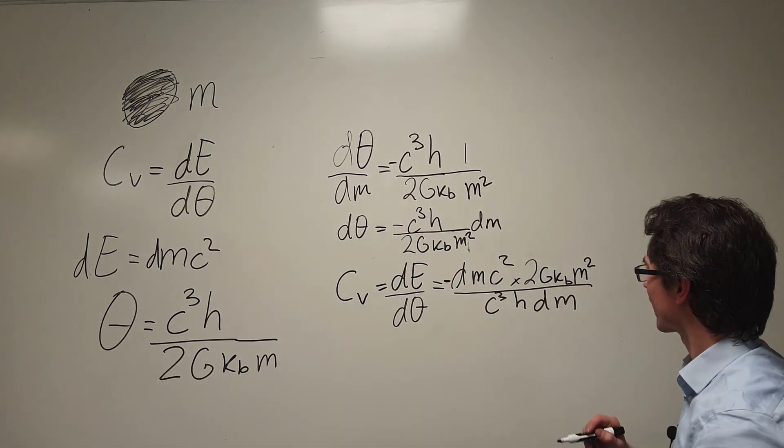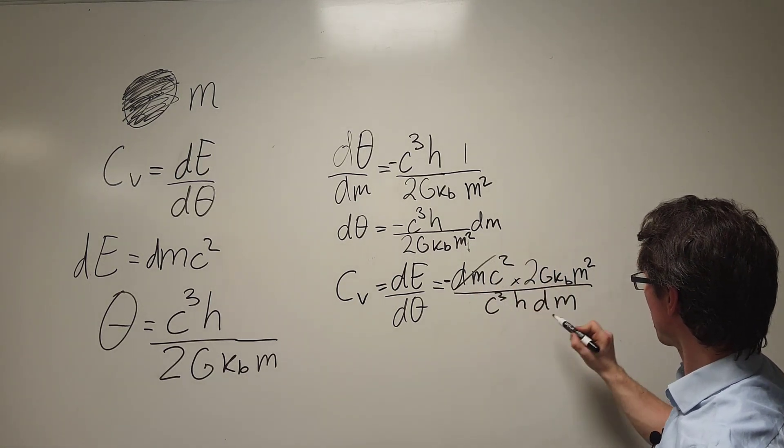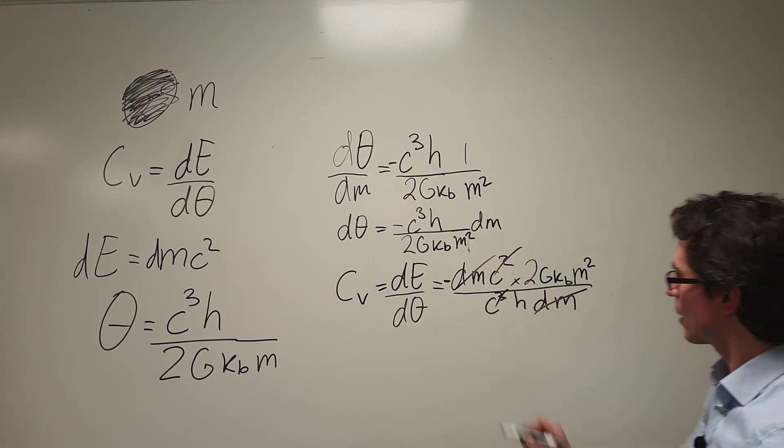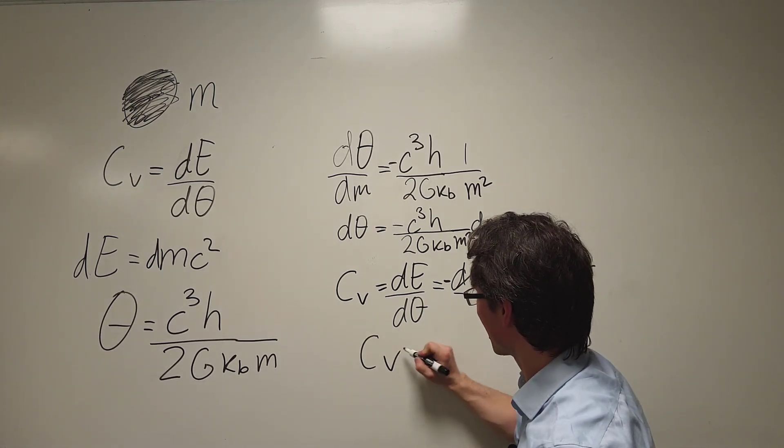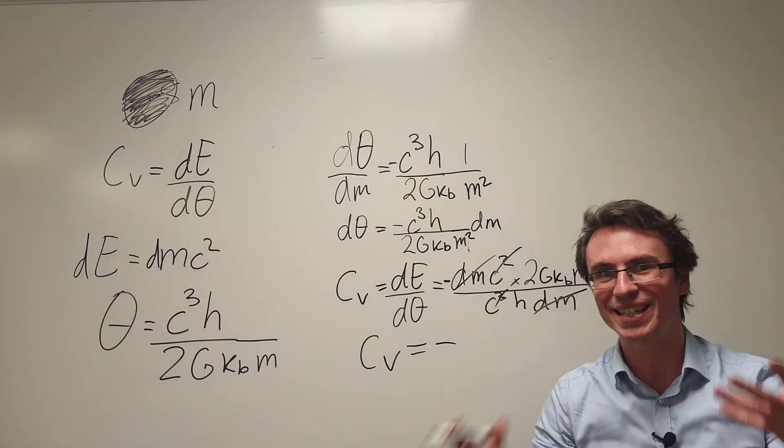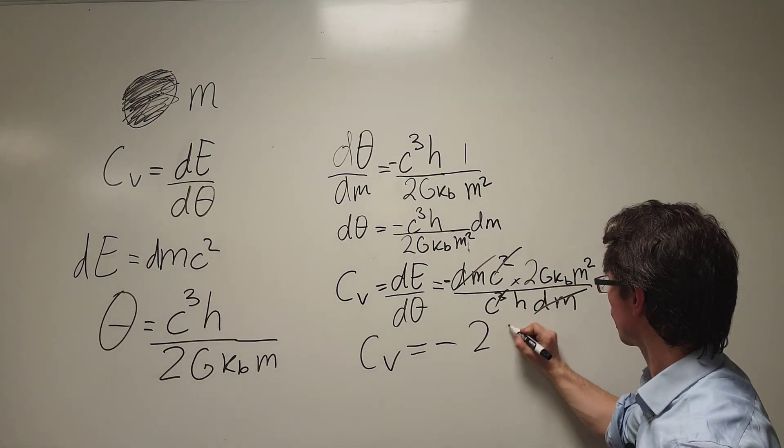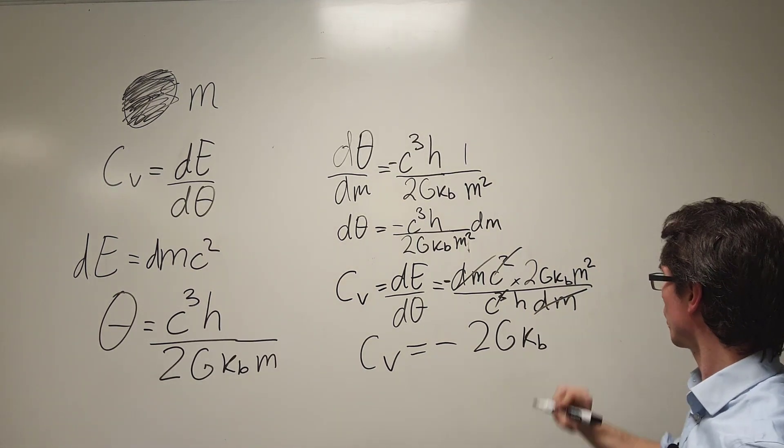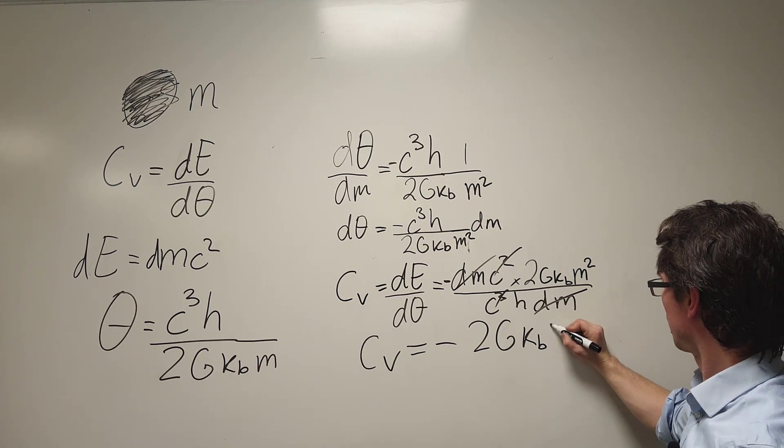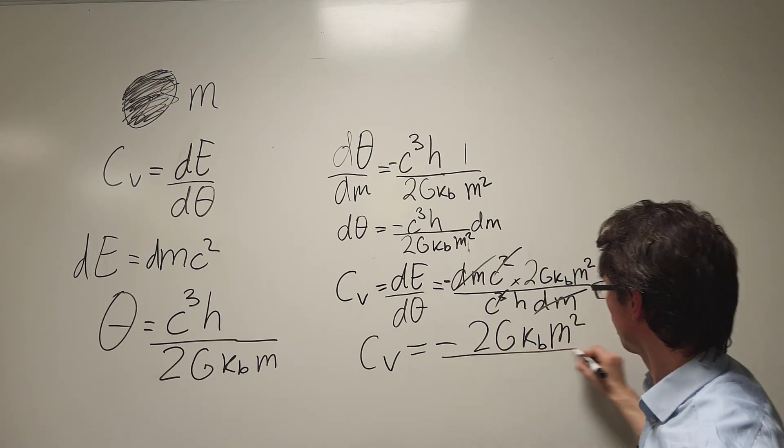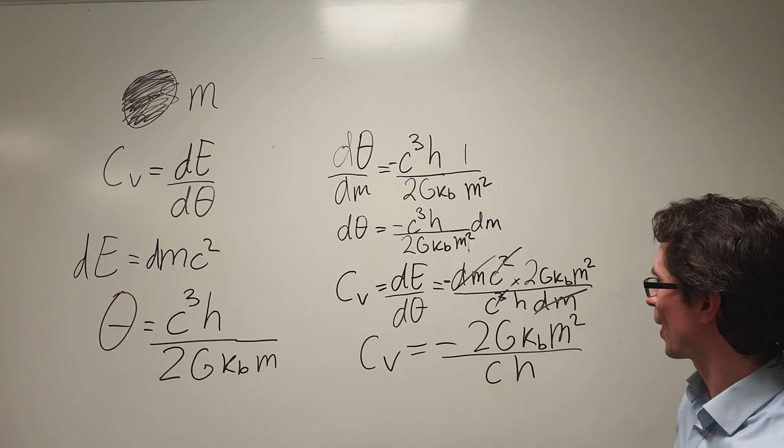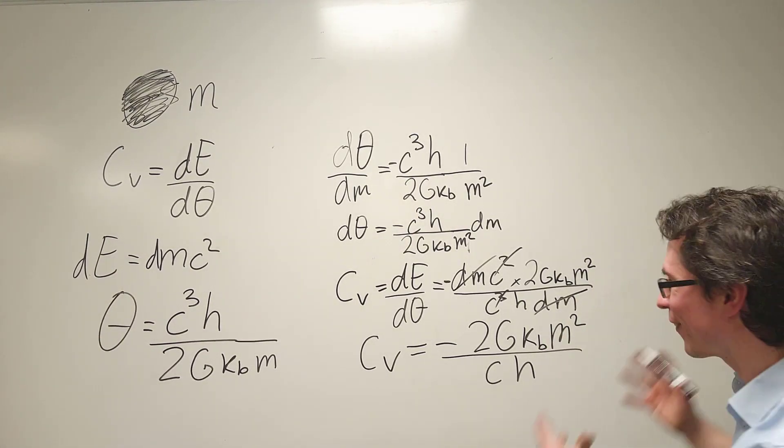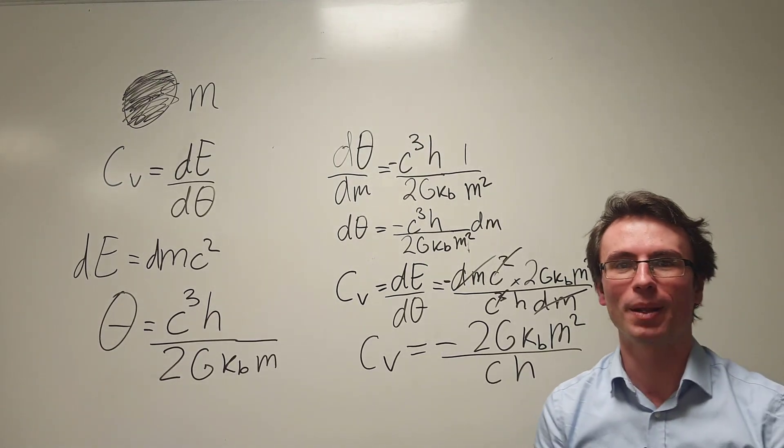And we can do a little bit of our cancelling out to tidy this expression. So we have a factor of dm here, we have a factor of dm here, we have c squared here and c cubed here and what we're left with is that the heat capacity of a black hole is indeed negative. It is equal to minus 2 times the gravitational constant times k which is Boltzmann's constant and then we have a factor of m squared divided by the speed of light and Planck's constant. And this here is an expression for the negative heat capacity of a black hole.